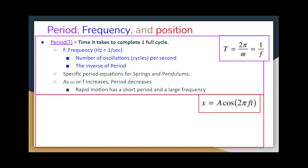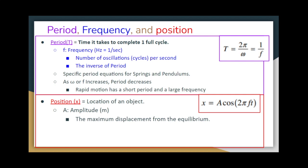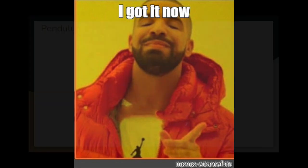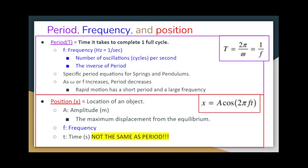We also have the equation x equals A cosine of 2 pi F t. Here, x stands for position or the location of an object. A stands for amplitude, measured in meters, which is the maximum displacement from the equilibrium point. F again stands for frequency. T in this case stands for time, measured in seconds — and it's important to note that this lowercase t is just normal time, meaning it is not the same as period. Cosine is just a trig function, and pi is just pi.